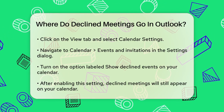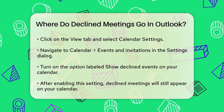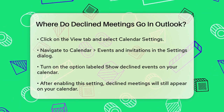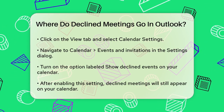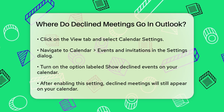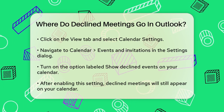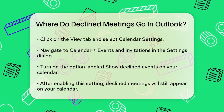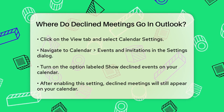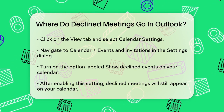Go to the Calendar view in Outlook. Click on the View tab and select Calendar Settings. In the Settings dialog, go to Calendar Events and Invitations. Look for the option labeled Show Declined Events on your calendar, turn it on, and then select Save.